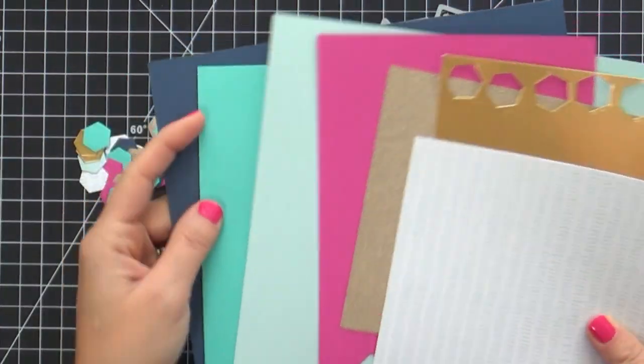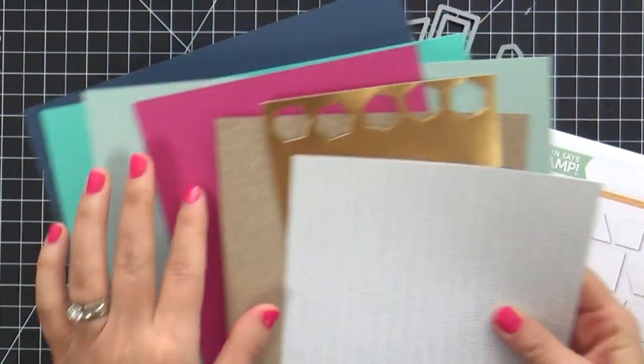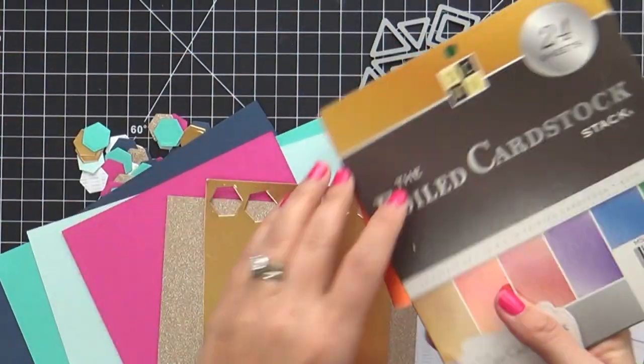Here's the cardstocks I use. Navy, Audrey Blue, Seaglass, Doll Pink. Got a little glitter gold going on. Here's the gold.